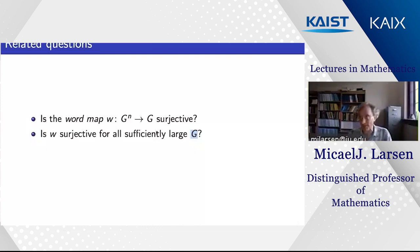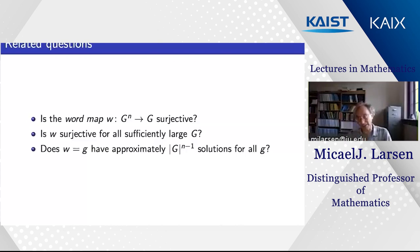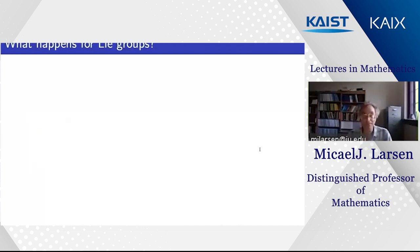The expectation most people have is that for most words w, if G is large enough, the map will be surjective. If you think of w as a randomizing function that mixes up group elements, and if n is bigger than one, then Gⁿ is much bigger than G, so you'd expect each element to be hit — probably a lot of times. In fact you'd expect approximately |G|^(n−1) solutions for each g.